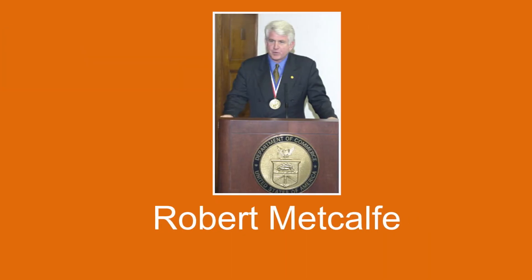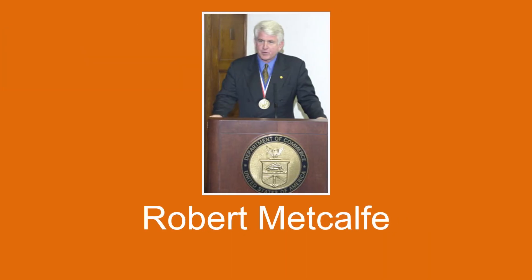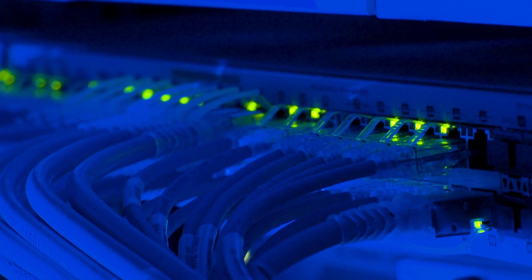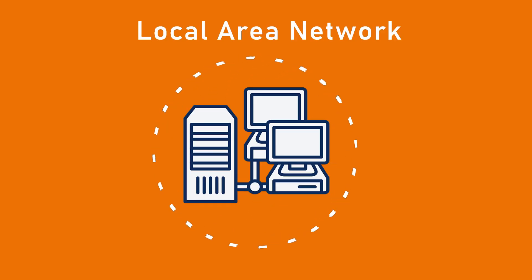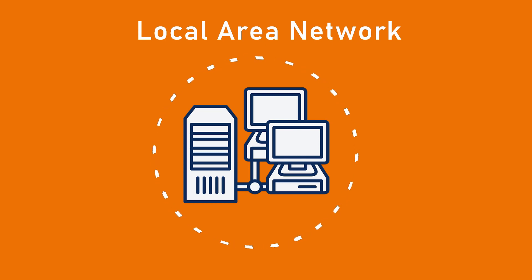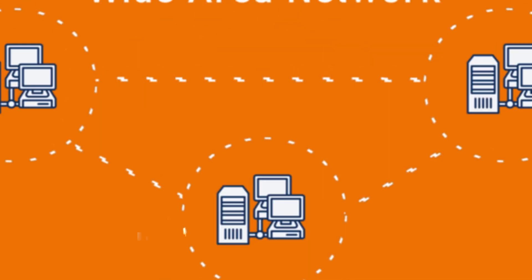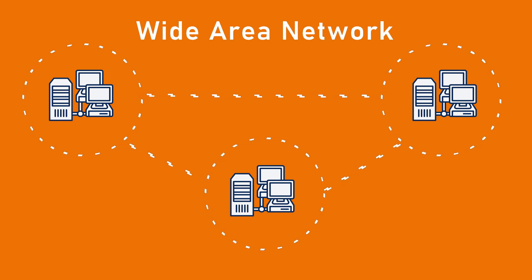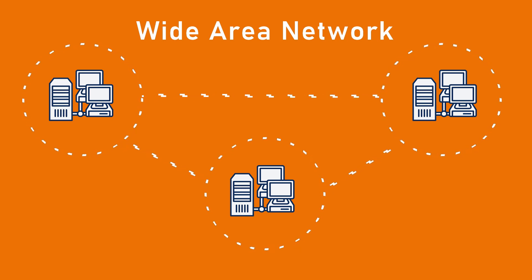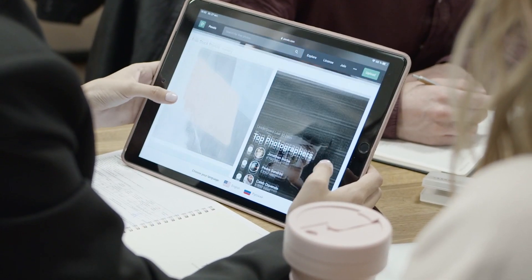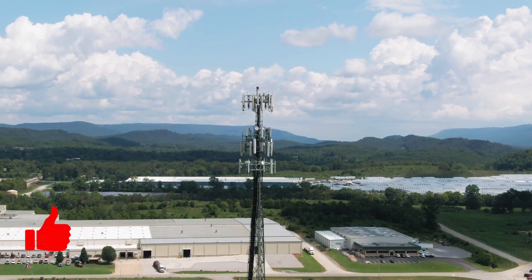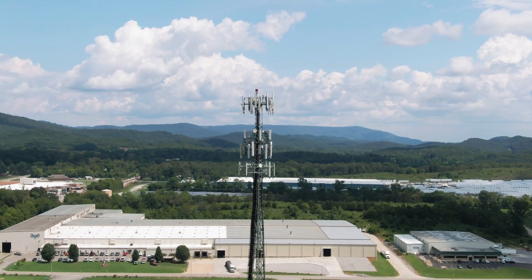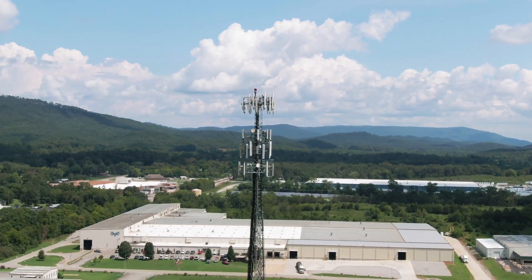Ethernet is the most common version of the computer network. It was invented in 1973 by Bob Metcalfe while working for Xerox. There are two main forms of Ethernet networks: the local area network, or LAN, tends to be small, rarely exceeding a few hundred devices. The wide area network, or WAN, on the other hand, can consist of multiple LANs. Our internet is in fact a wide area network. One thing of note: wide area networks can incorporate technologies that are not necessarily Ethernet.